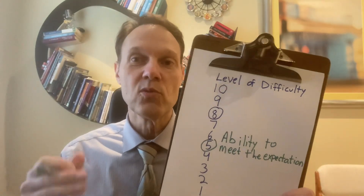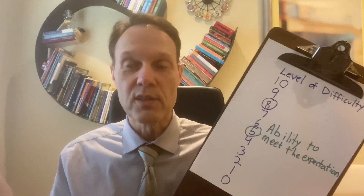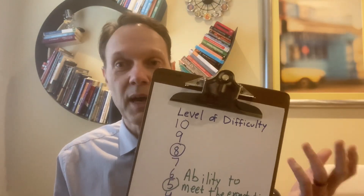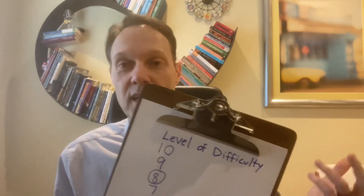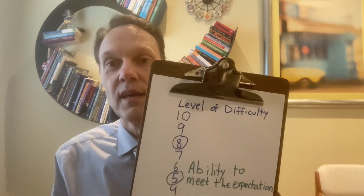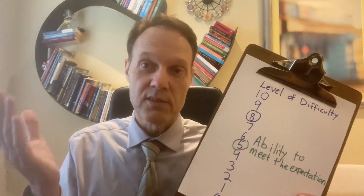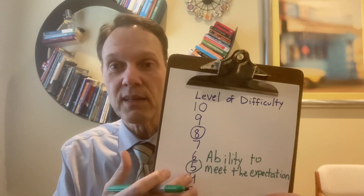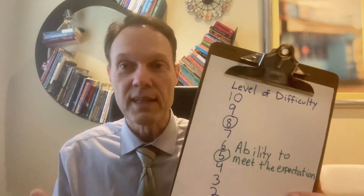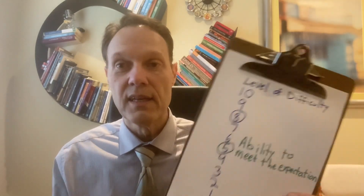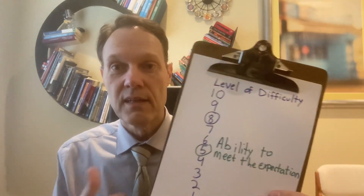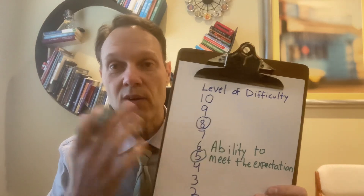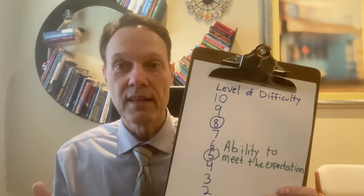For example, if you're an adult and you have to do third-grade-level math and you're fine at math, the level of difficulty is not that hard and your ability is higher than the level of difficulty. You're not going to feel stressed.